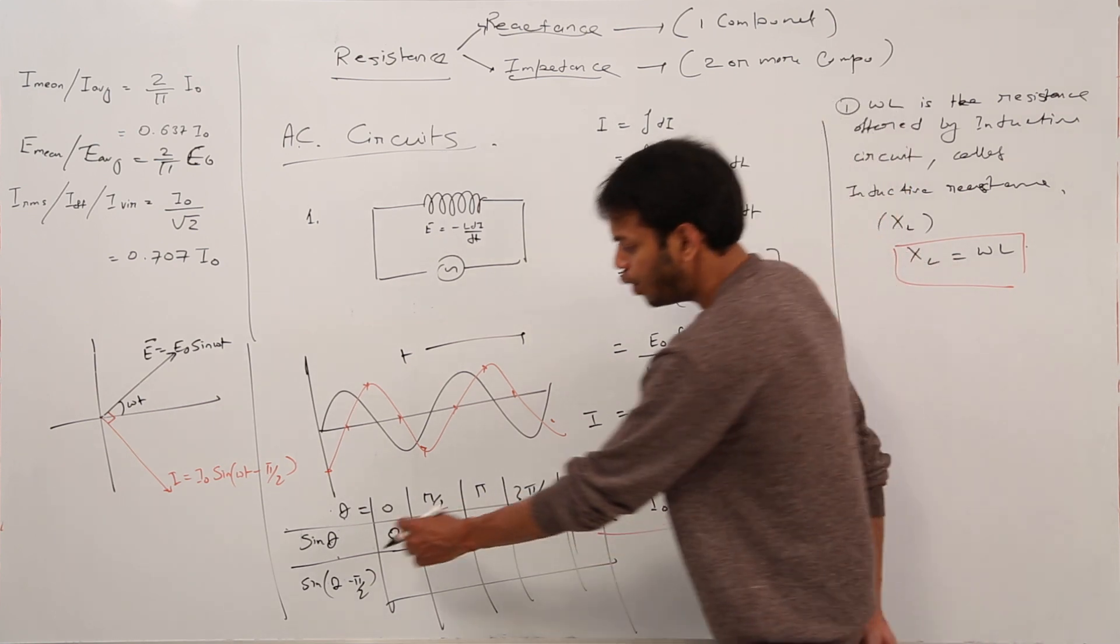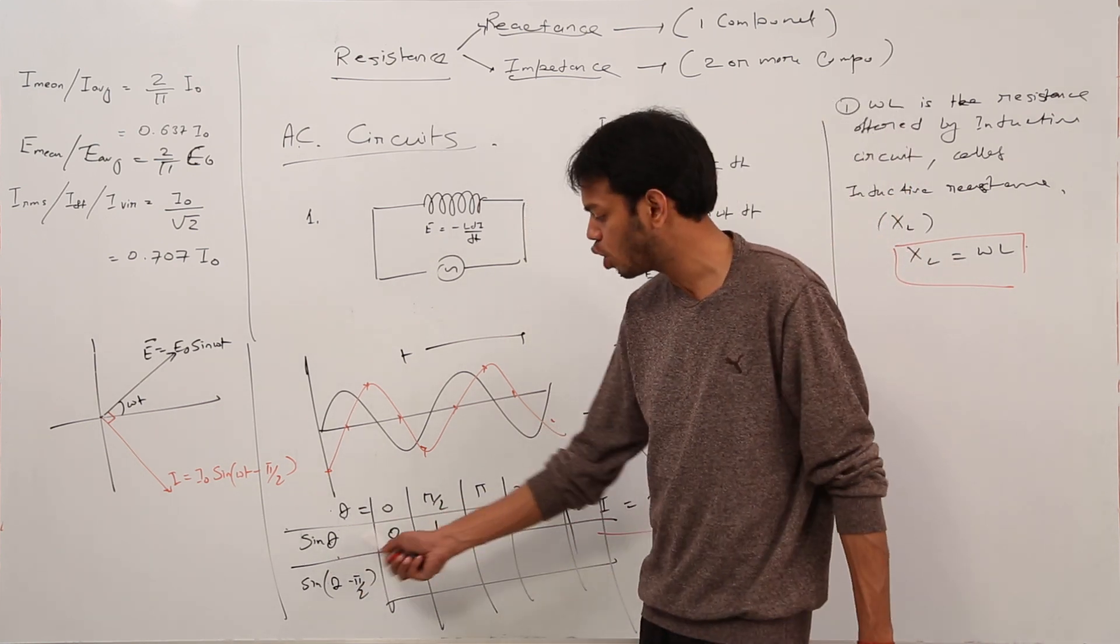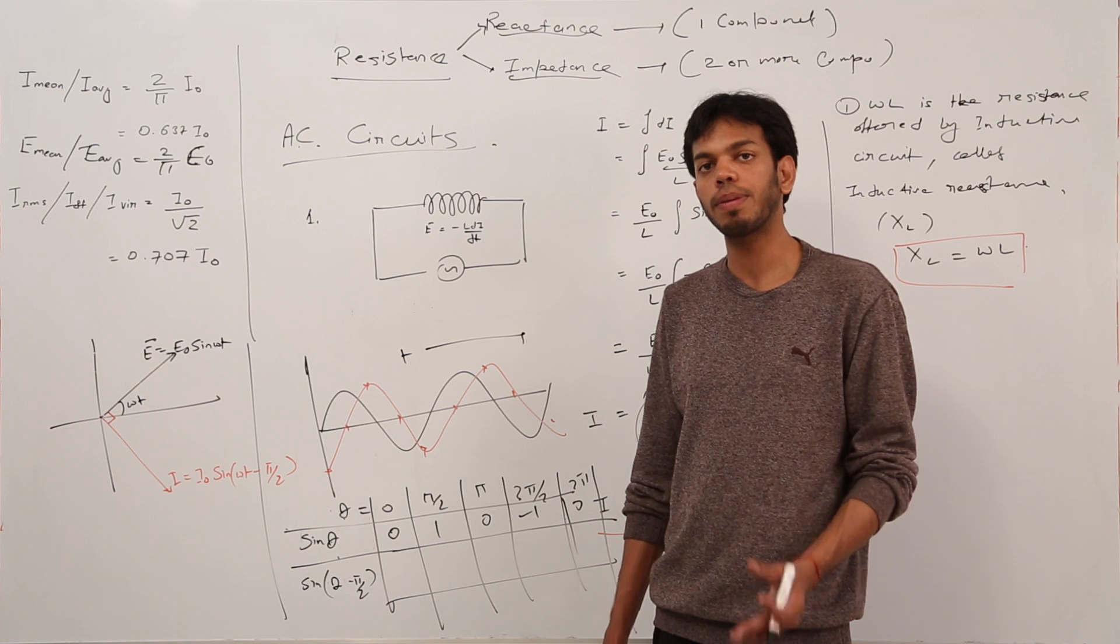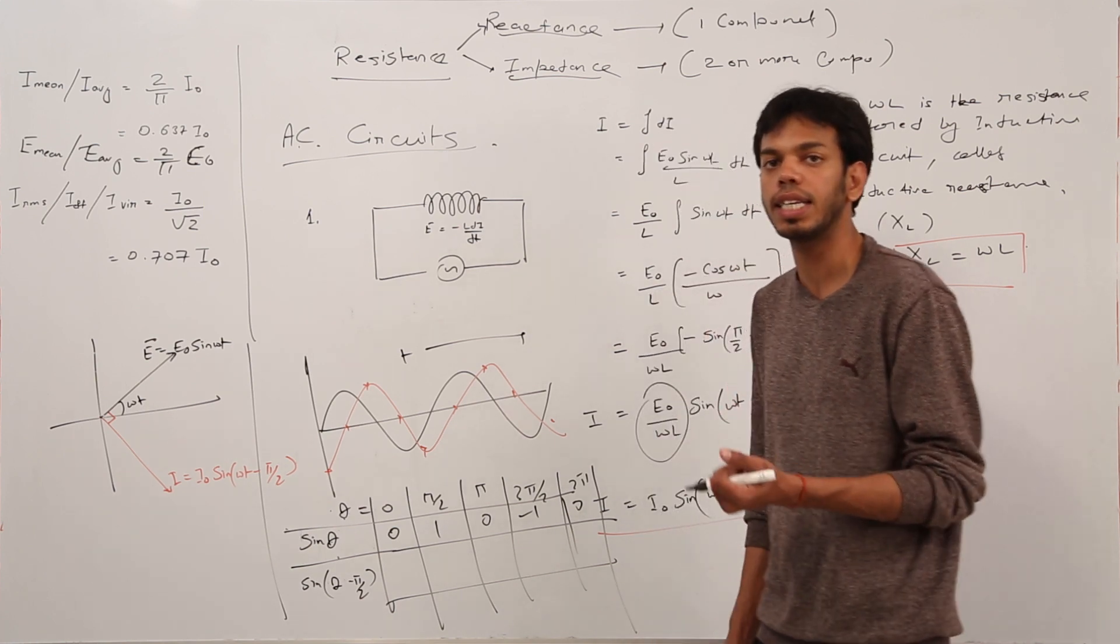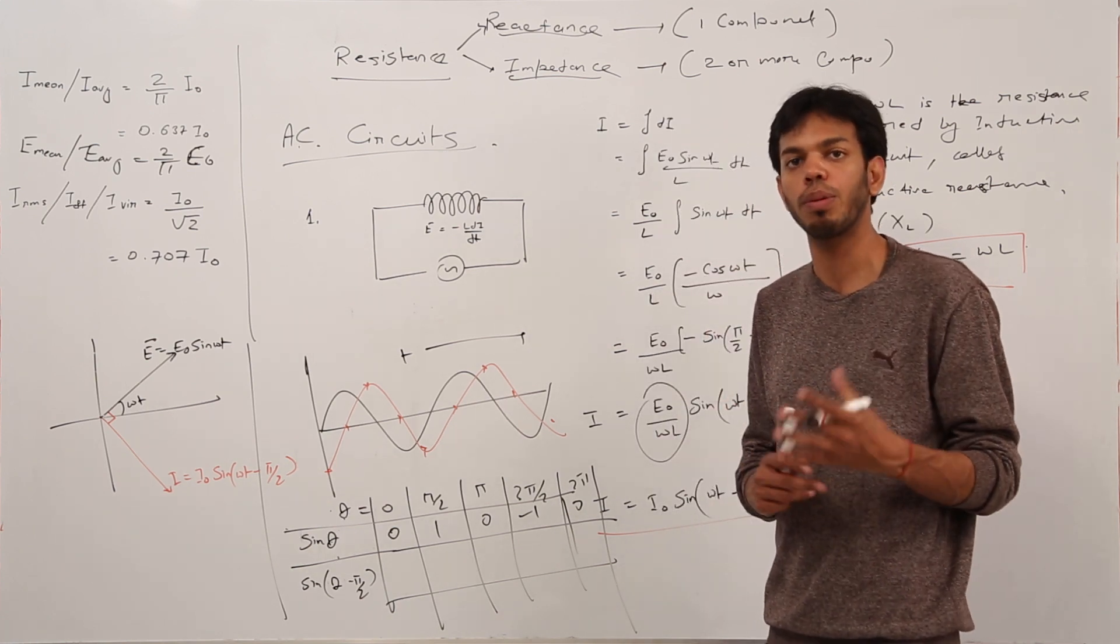When you do sin(θ - π/2), what is 0 - π/2? Sin(0 - π/2), sin(-90°). Sin 90° is 1, so sin(-90°) would be -1.